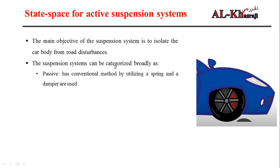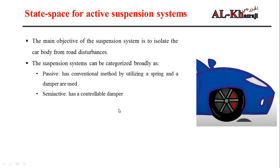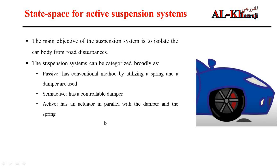There are three types of suspension systems broadly speaking. The first is the conventional passive suspension, which just has a spring and damper between the car body and the wheel. In the semi-active suspension, we have a controllable damper. The third type, which is the active suspension system, also has an actuator in parallel with the damper and spring.